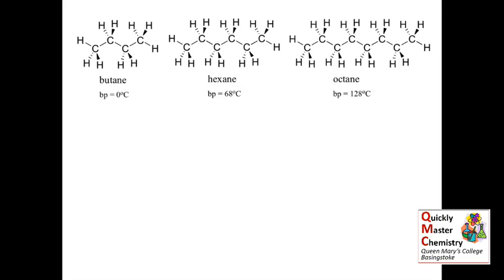When it comes to talking about boiling, what we're talking about is separating molecules, moving them apart from each other. To do that, you've got to break the intermolecular bonds, and that requires energy. So the full explanation here is that butane, with its short chains, has less opportunity for instantaneous dipole-induced dipole intermolecular bonds to form than octane with its long chains. This means that it will take less energy to break the intermolecular bonds between the butane molecules in order for them to move apart than is the case for octane. And hence, butane will have a lower boiling point than octane.